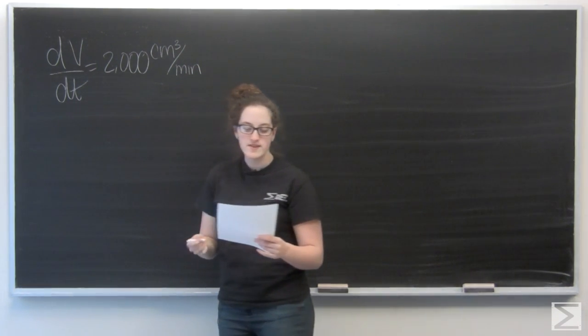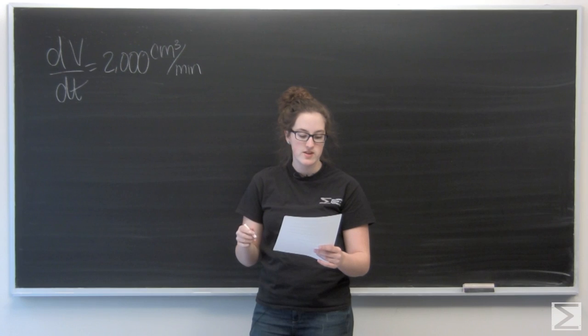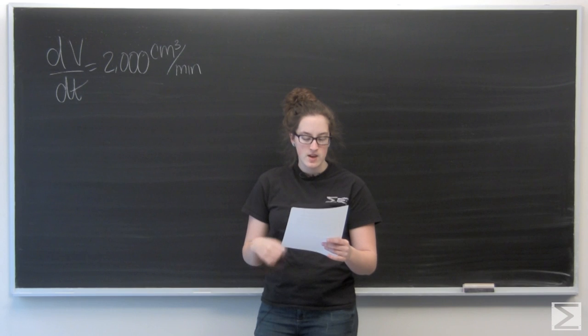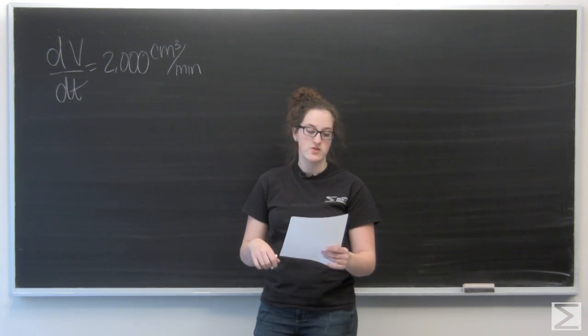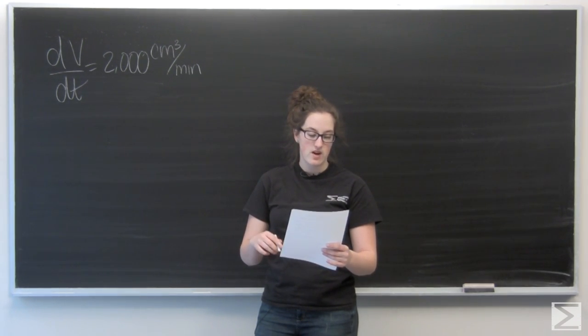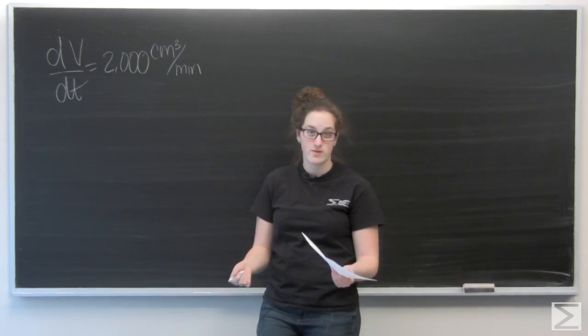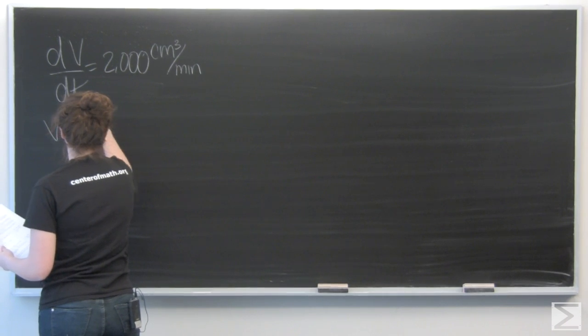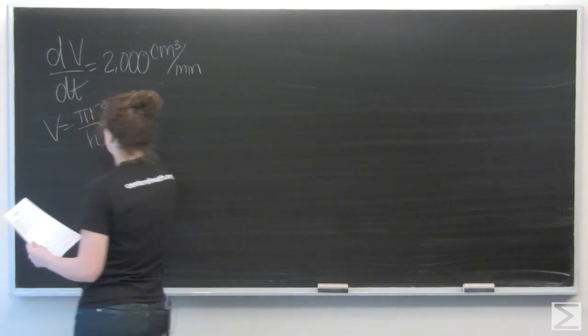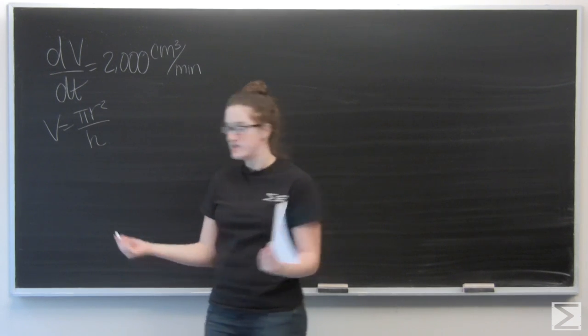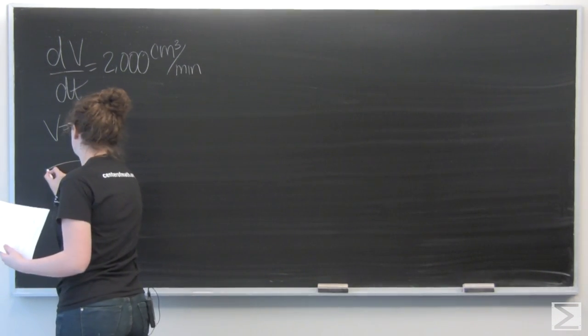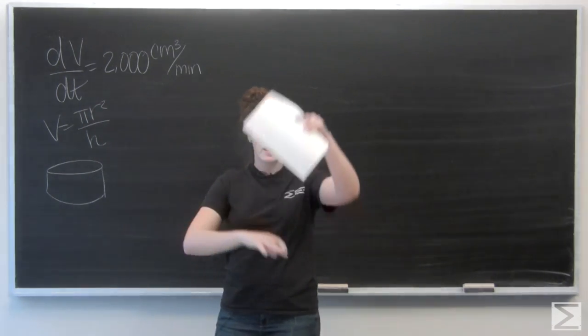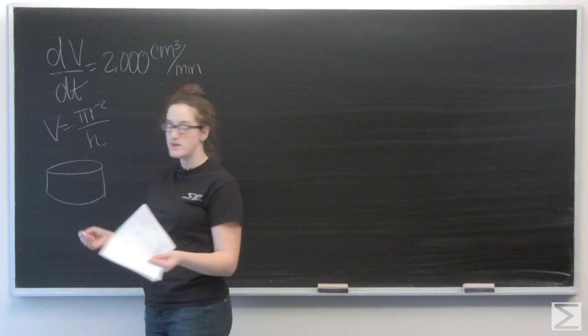The oil slick takes the form of a right circular cylinder with both the radius and its height changing with time. Note, the volume of a right circular cylinder with radius r and height h is given by volume equals πr²h. So I have this cylinder and both its radius and its height are changing with time.